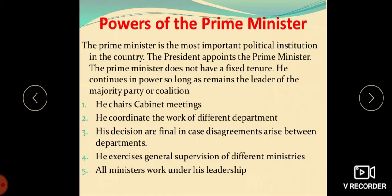Before 1979, the Constitution did not refer to the word 'cabinet'; it referred only to the Council of Ministers. The 44th Amendment Act provides that the President shall not issue a proclamation of national emergency unless the decision of the Union Cabinet has been communicated to him in writing. After this, the distinction between the Cabinet and the Council of Ministers became evident.